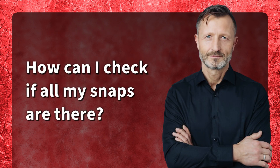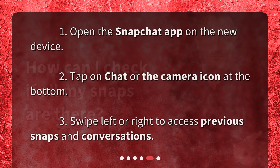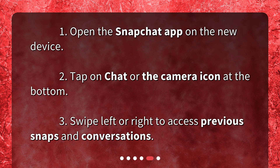How can I check if all my snaps are there? 1. Open the Snapchat app on the new device. 2. Tap on Chat or the camera icon at the bottom. 3. Swipe left or right to access previous snaps and conversations.